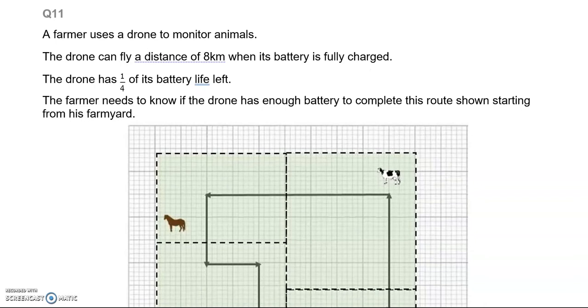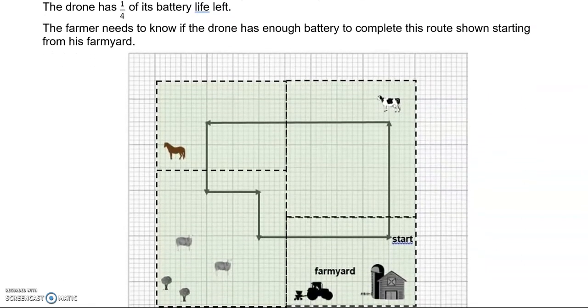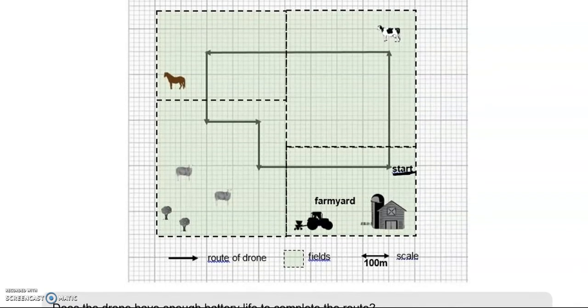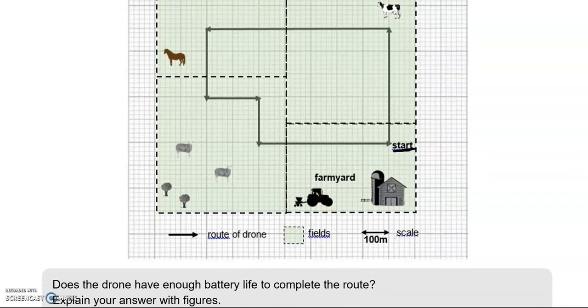Question 11. A farmer uses a drone to monitor animals. The drone can fly a distance of 8 kilometers when its battery is fully charged. The drone has one quarter of its battery life left. The farmer needs to know if the drone has enough battery to complete this route shown starting from his farmyard. That's where it's going to start. And the route is shown in green. Does the drone have enough battery life to complete the route?